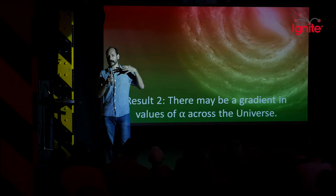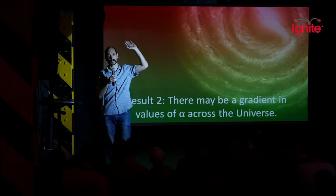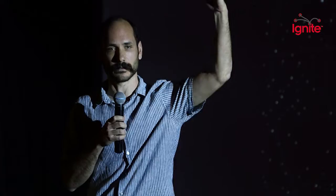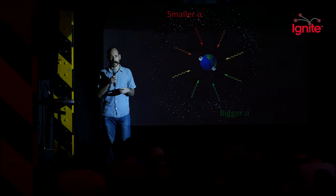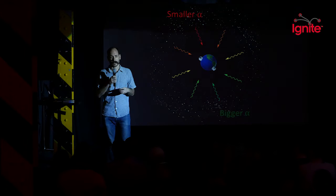The second result is far more controversial, and has led to some fairly interesting discussions in the scientific community. We found that there might be a gradient in the values of alpha across the universe — in one direction of the sky alpha would be slightly larger, whereas in the other direction it's slightly smaller, and we're somewhere in the middle. From one end of the universe to the other, it changes by about a part in 100,000. These are very precise measurements and a very small effect, but it has profound implications.